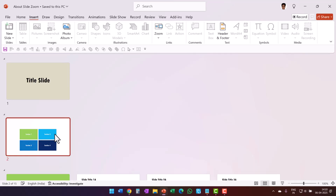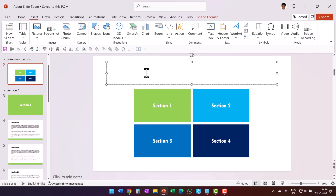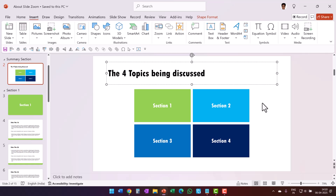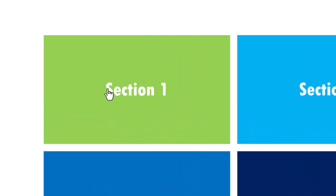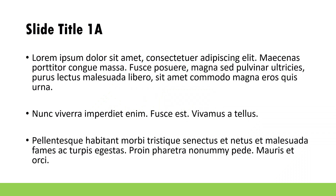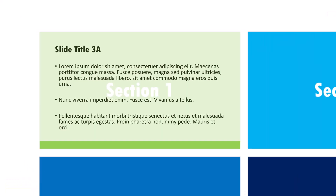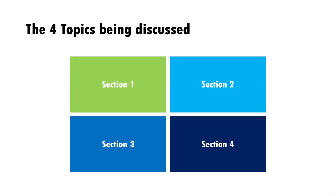Now I can go to the summary section and give it a title like 'the four topics being discussed.' You can give whatever title is more appropriate. The best part is when I go to slideshow, I can click on the first section and that takes me to section 1. I can keep hitting Enter or Page Down to explain my individual slides in that section, and once the explanation is over in section 1, I automatically come back to this orientation slide.